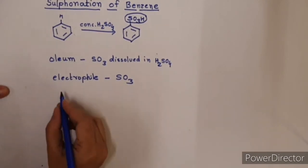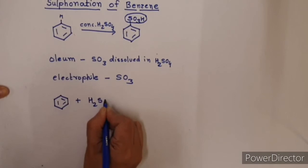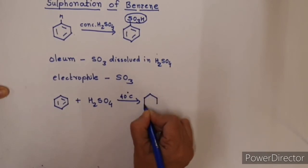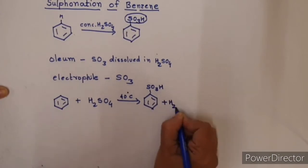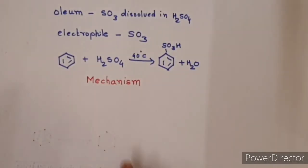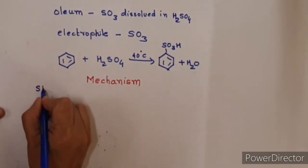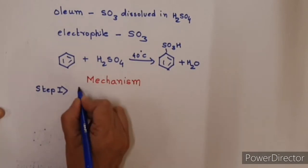Now the elaborate reaction we can write like this: benzene on treatment with concentrated H2SO4 at 40 degrees centigrade gives benzene sulfonic acid and water molecule. Now, you know that we show the mechanism of aromatic electrophilic substitution in three steps. Step 1 is generation of an electrophile.